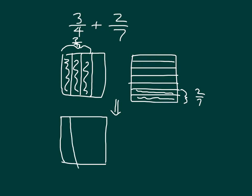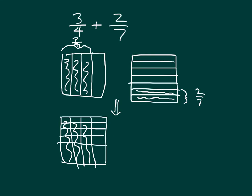We need an equivalent fraction for 3-4ths. Starting with 3-4ths, we draw 6 lines to divide into 7 parts. Counting the total parts, we get 7, 14, and 21 — so 21 shaded parts out of 28 total. Notice that 3-4ths times 7 over 7 equals 21-28ths. This is 3 rows of 7 columns.